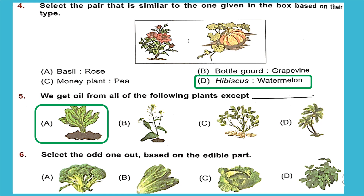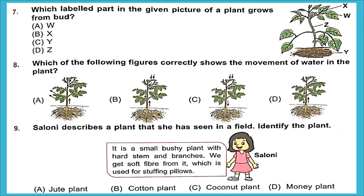Question 6: Select the odd one out based on the edible part. A is broccoli — a flower. B is lettuce — green leaves. C is cabbage — leaves. D is mint — also leaves. The odd one out is option A, broccoli, because that's a flower and the others are leaves.